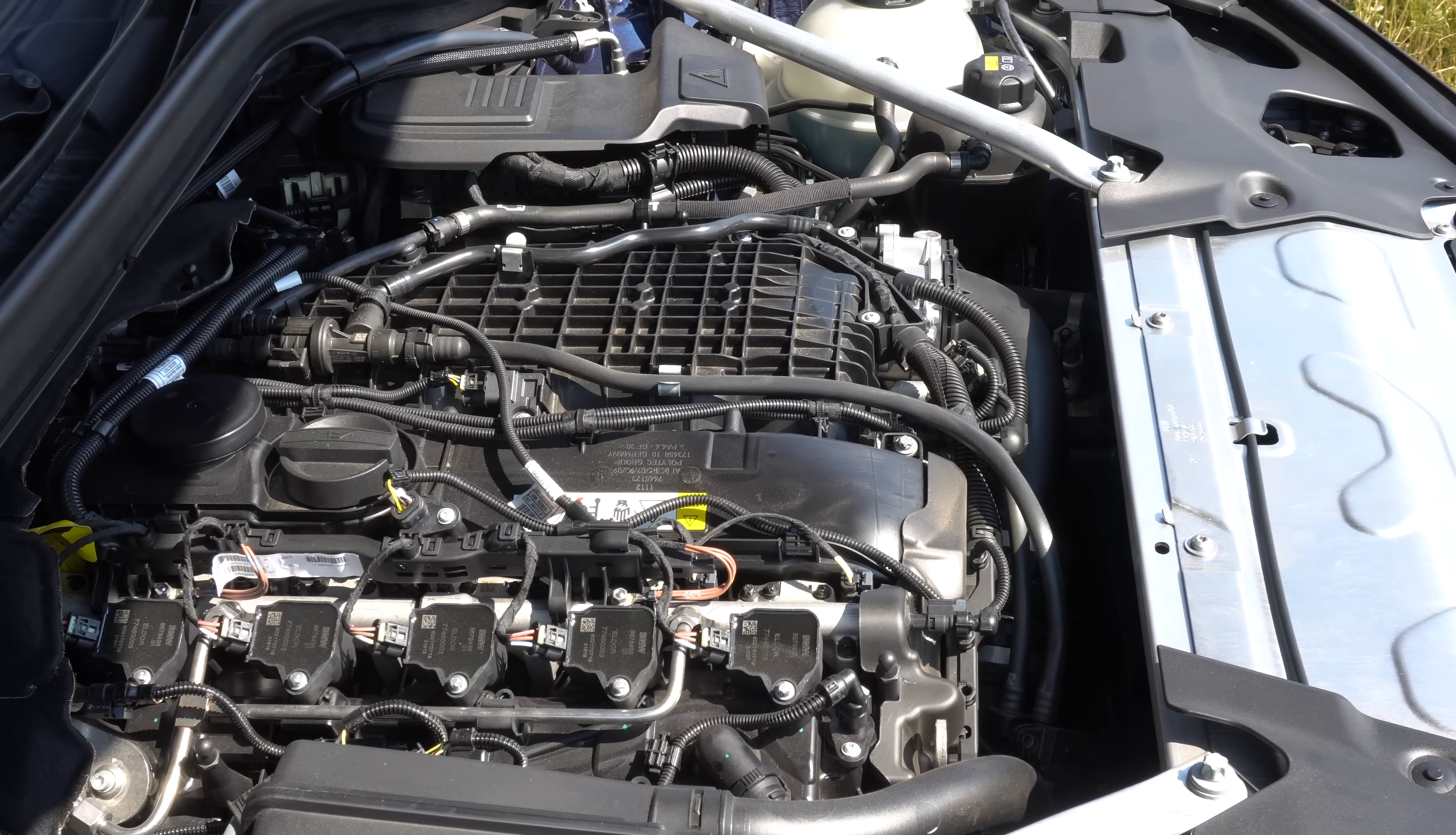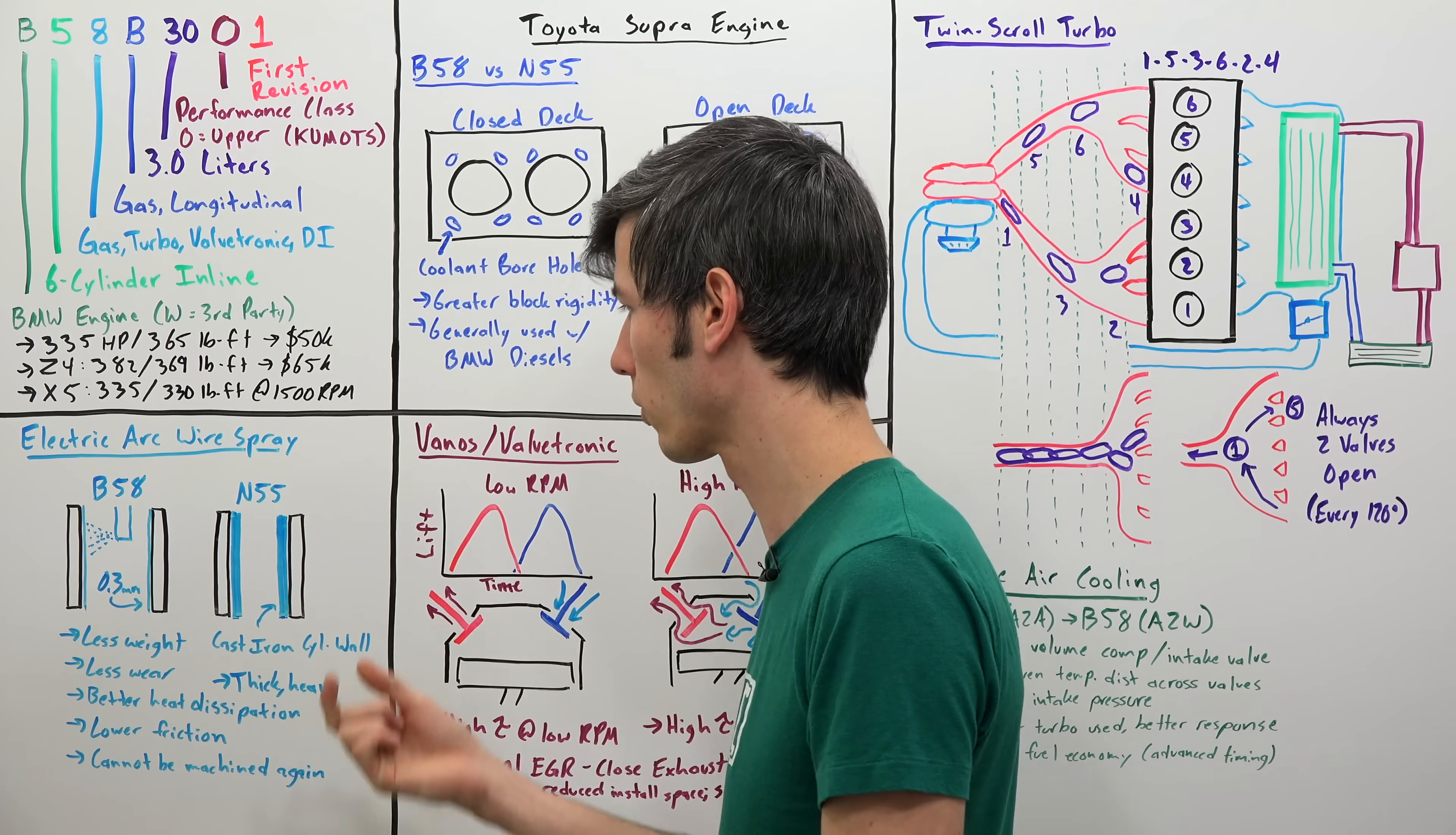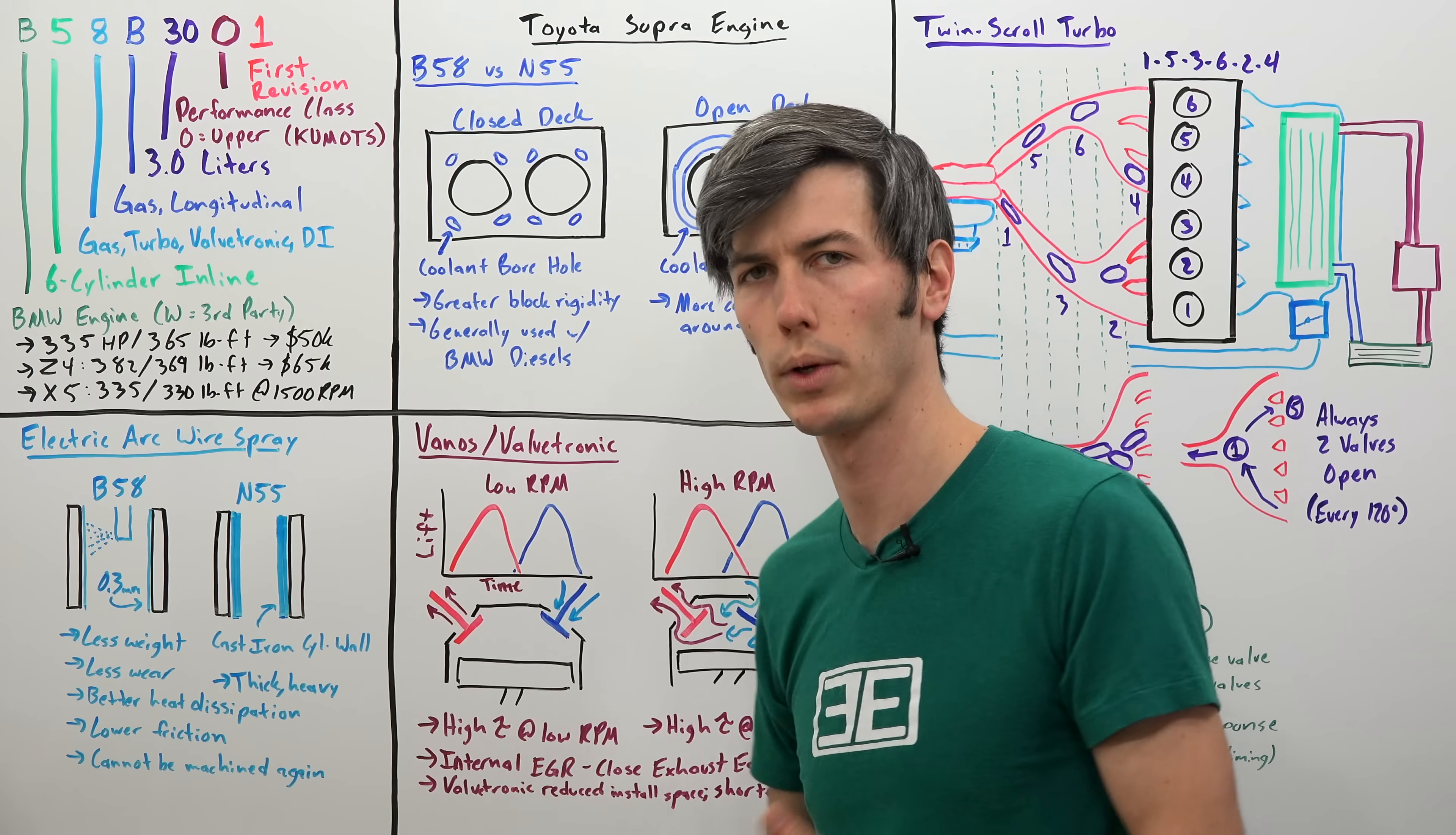The B58 engine is also using an upgraded cylinder liner. So whereas previously they were using cast iron cylinder walls, now they are using an electric arc wire spray and actually spraying on that cylinder liner. And it's very thin, so it means you can have a larger bore with the same size block. It weighs less. It's only just 0.3 millimeters in thickness versus the cast iron cylinder walls, which will be much thicker. It has less wear, better heat dissipation, lower friction. BMW says the unfortunate thing with these is that they cannot be machined again. So they will last longer typically and they have less wear associated with them, lower friction, better lubrication properties. But unlike a cast iron cylinder wall where you could simply machine that again if you were rebuilding the engine.